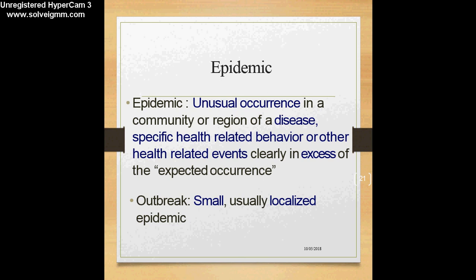We use the term outbreak when it is usually a small, localized epidemic. For example, if there is a large number of cases of food poisoning occurring in a cafeteria of a school after eating a particular meal, we would term it an outbreak rather than an epidemic because it is localized only to that school. Epidemic is for larger regions whereas outbreak is more localized and for smaller regions.